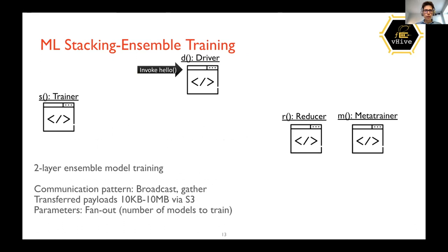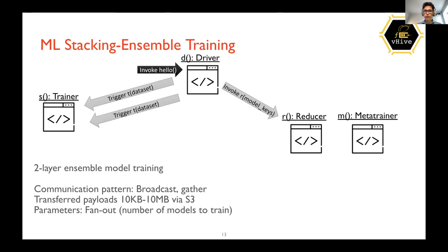Another function is machine learning stacking ensemble training. The outcome is a two-layer ensemble model that is trained. The driver triggers a number of trainers — similar to the previous workload — but only once. After that, the driver invokes a reducer to collect the trained models and passes them to the meta-trainer, which trains the two-layer ensemble model. The fan-out is configurable.